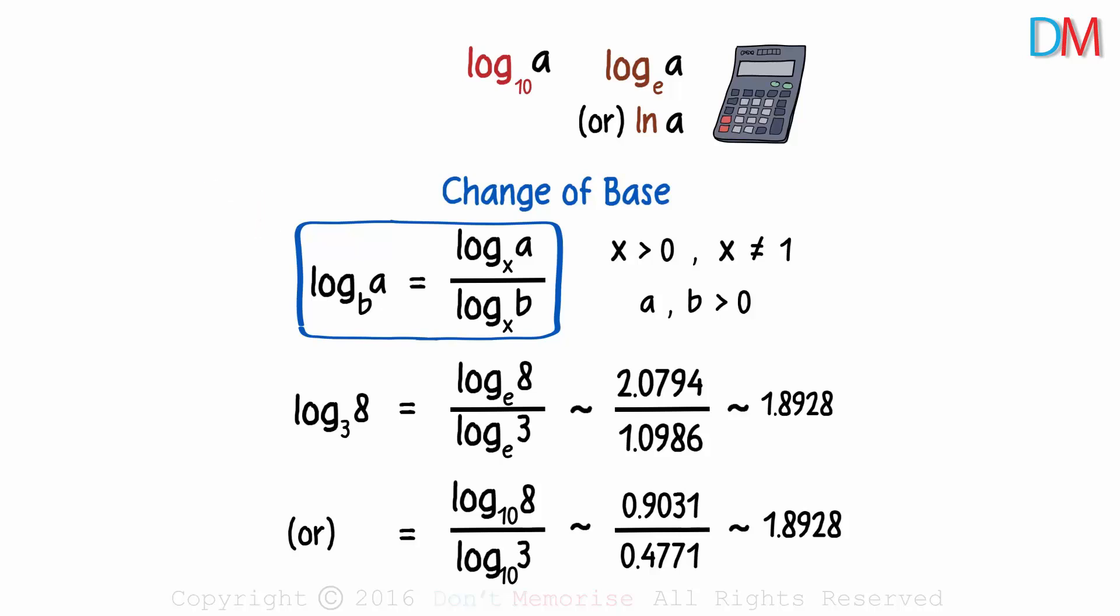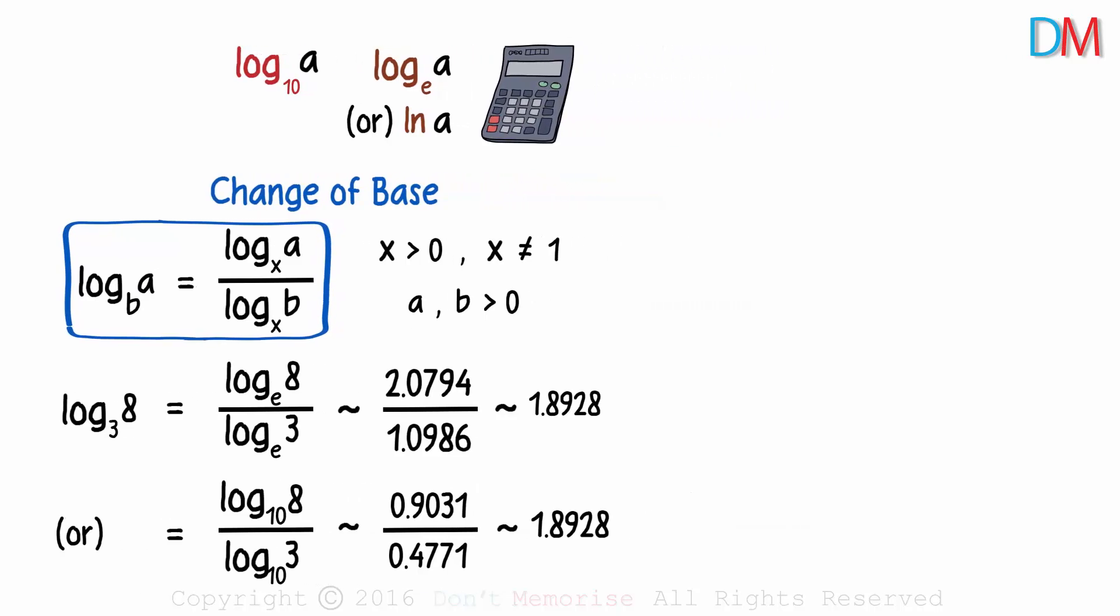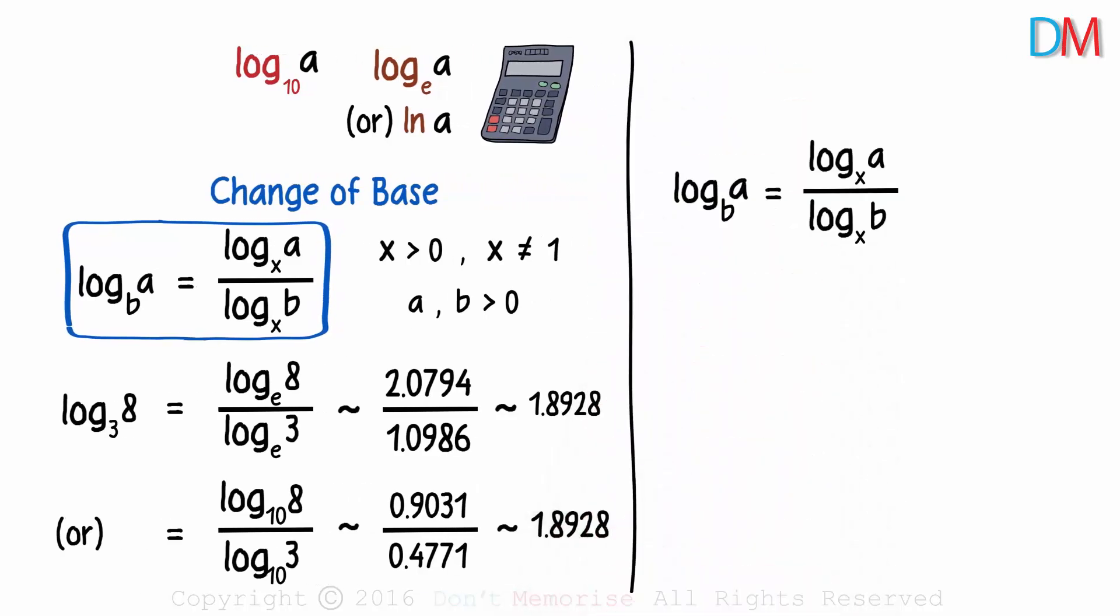And with this formula, there's one other minor property we can derive. We know this formula. Now if we divide the numerator and the denominator by log of A to the base X, we get this.